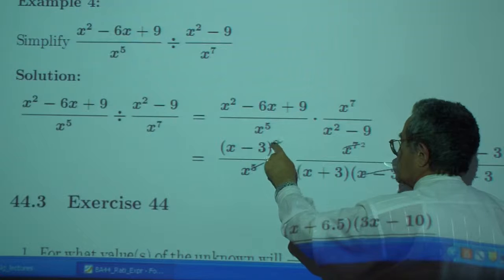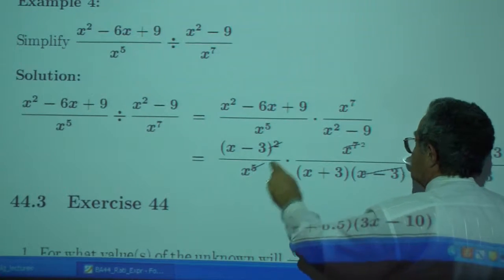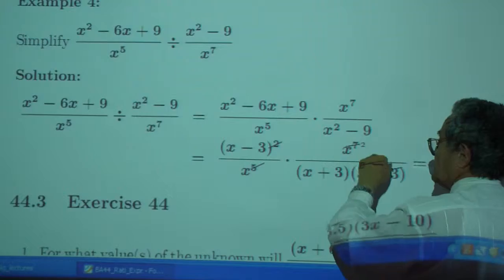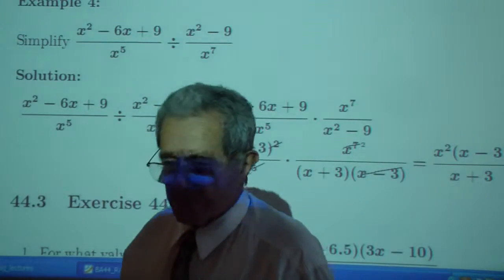And the x minus 3, one of the x minus 3's drops out here. x to the 5, x to the 7, we are left with x squared in the numerator.